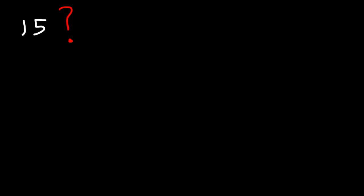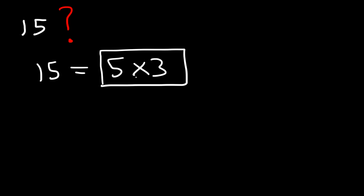Now what about 15? Is 15 a composite number or a prime number? What numbers multiply to 15? Can we find two numbers that multiply to it that don't contain a 1? If you know your multiplication tables, you know that 5 times 3 is 15, and 5 and 3 are not 1. So 15 is a composite number.